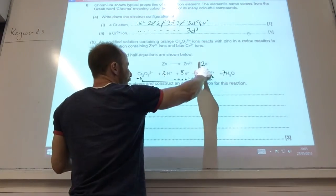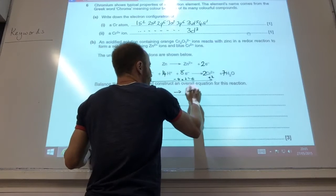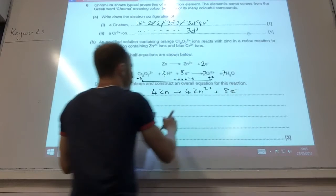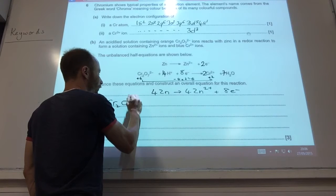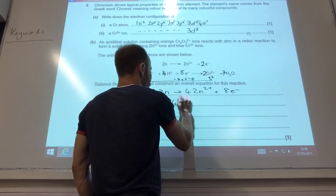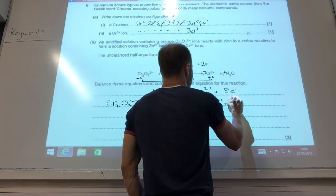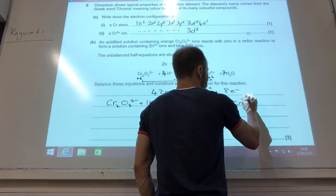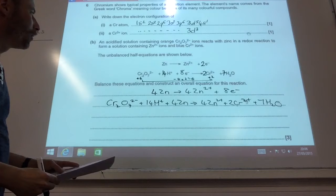Now, 2 electrons there, I've got 8 there. So I'm going to times that zinc by 4. And then I'm going to add them together. So the overall equation, plus 14 H plus, plus 4 zinc, goes to 4 zinc 2 plus, plus 2 chromium 2 plus, plus 7 H2O. And that's your overall equation.